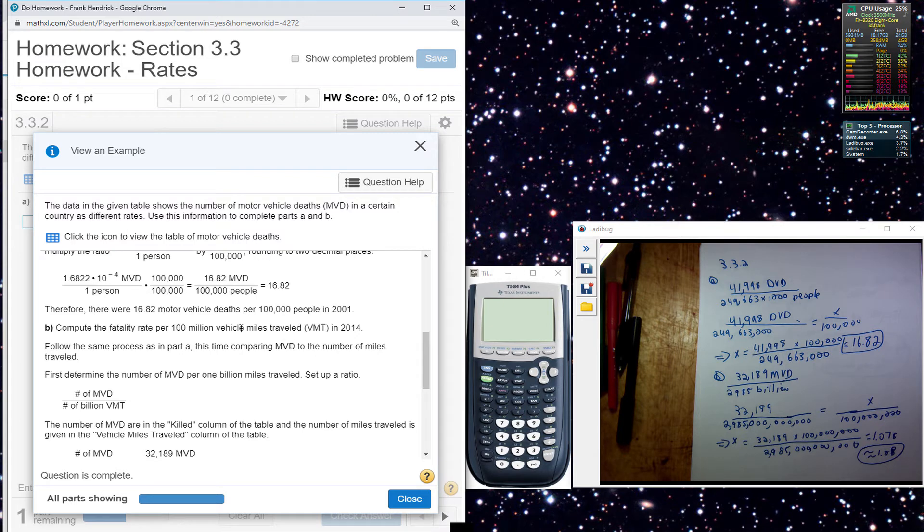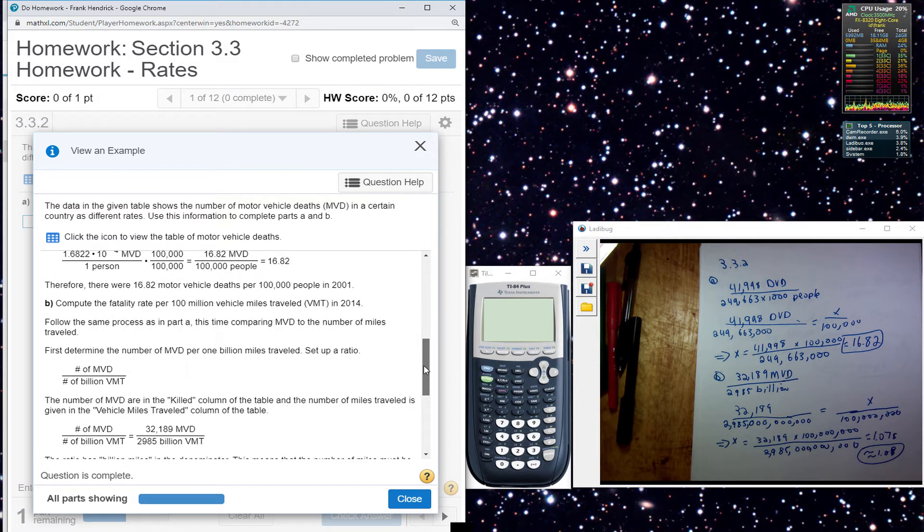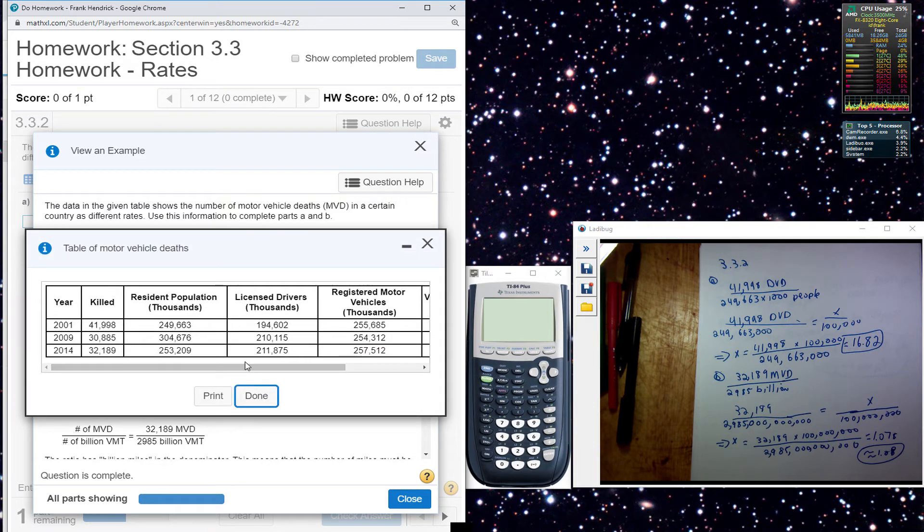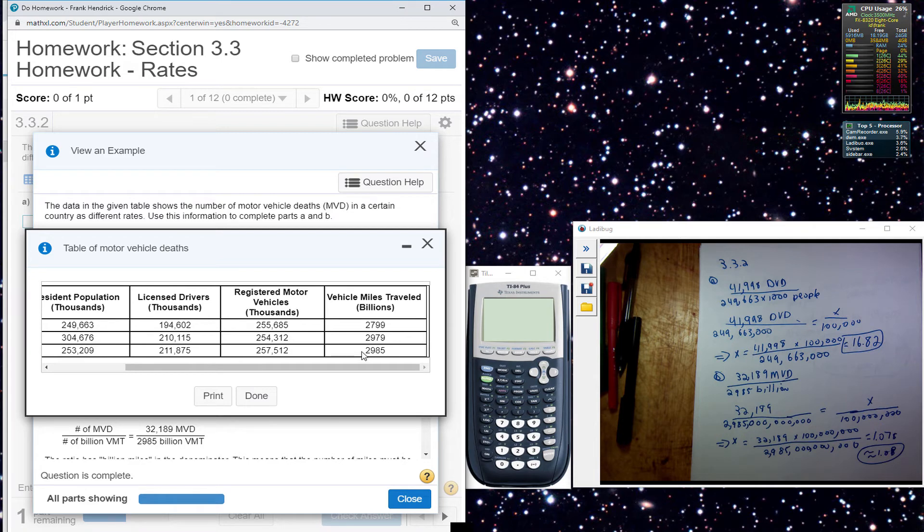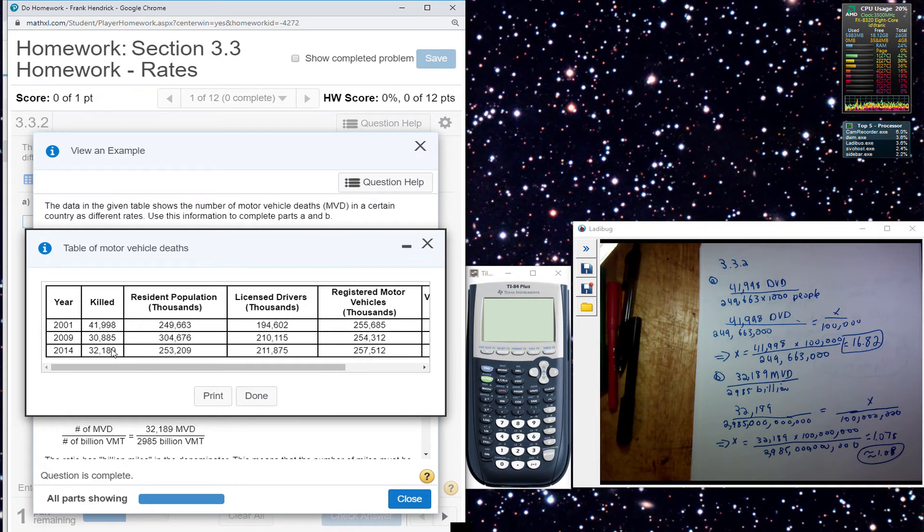And the next one is for 2014. So here I have 2014, look at the table there. 29.85 billion for that part and the number of deaths overall is 32,000. So I set up a proportion here.